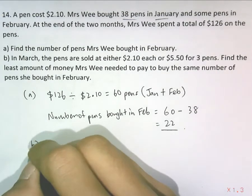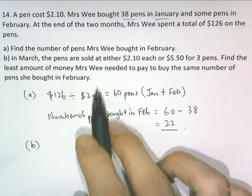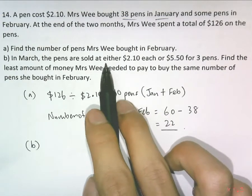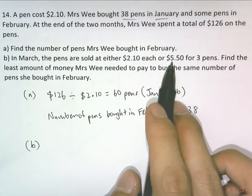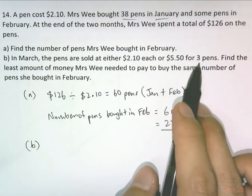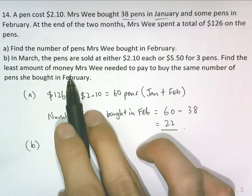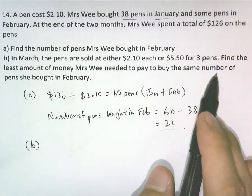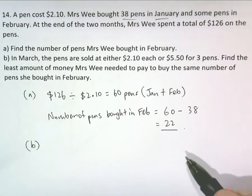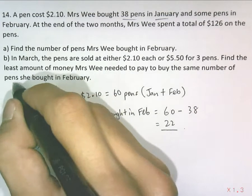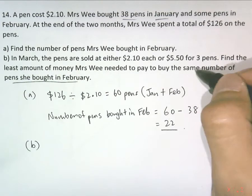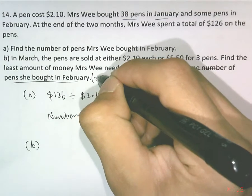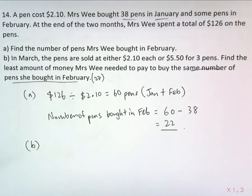For Part B, in March the pens were sold either at $2.10 each or $5.50 for three pens. For the least amount of money Mrs. Wee needed to pay, she wants to buy the same number of pens she bought in February — so 22 pens to be bought in March.